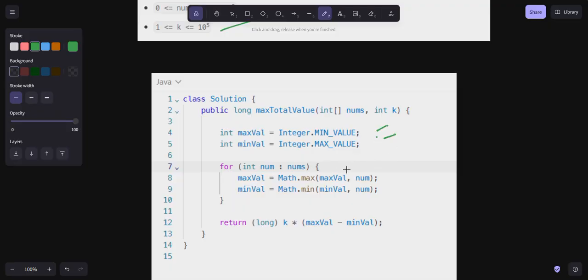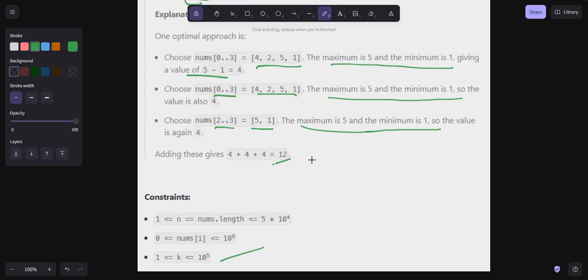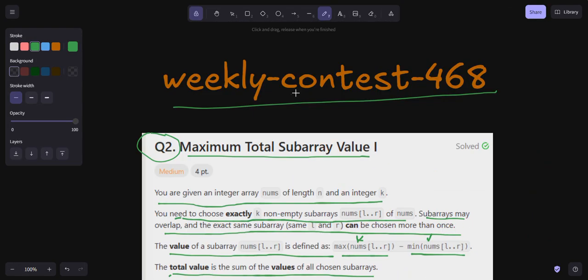Max value, min value - iterate over all the numbers, take max and min, and k value multiplied with (max value minus min value) and return the answer. That's it. I hope you guys are clear with question number two of weekly contest 468. If you still have any doubts, please feel free to ask in the comment section. Thank you, bye bye.